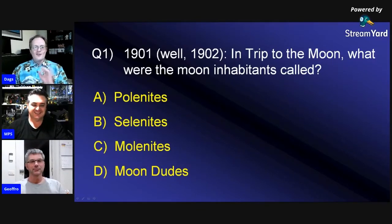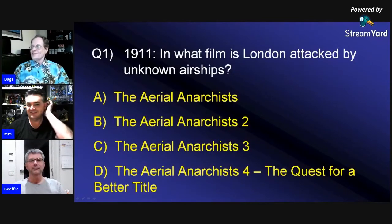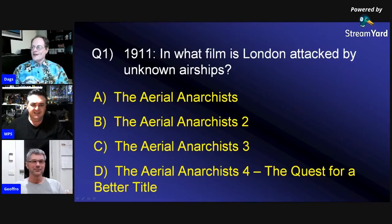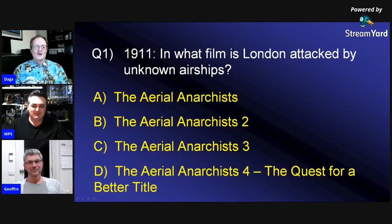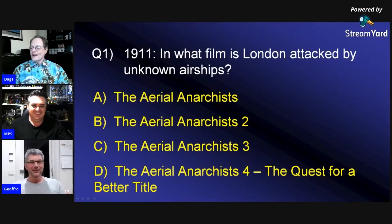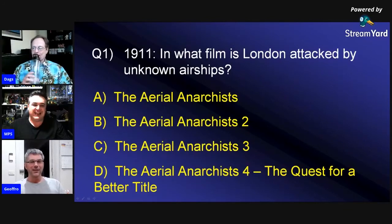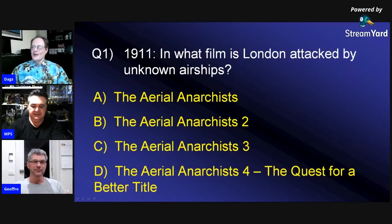That was 1901. The only science fiction movie made in 1911: in what film is London attacked by unknown airships? Was it A, the Aerial Anarchists; B, the Aerial Anarchists 2; C, the Aerial Anarchists 3; or D, the Aerial Anarchists 4, the Quest for a Better Title? I think it'd have to be A — I don't think they were making sequels back in 1911. It was the only one I could find. Who would have thought there was a sci-fi movie in 1911?